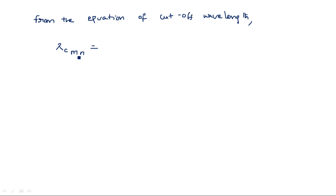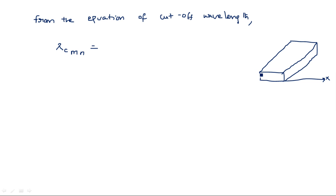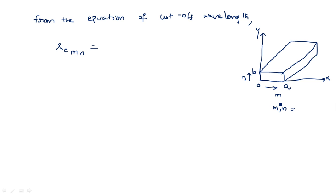M and N specify the electric field component movement in breadth and width respectively. Suppose you have a rectangular waveguide: this is the x-axis and this is the y-axis, this dimension is B (the width of the waveguide) and this is A (the breadth of the waveguide). If you are seeing the electric field variation in the x-direction, that is M; if you are seeing it in the y-direction, that is N. Depending on M and N values, several types of modes are produced.